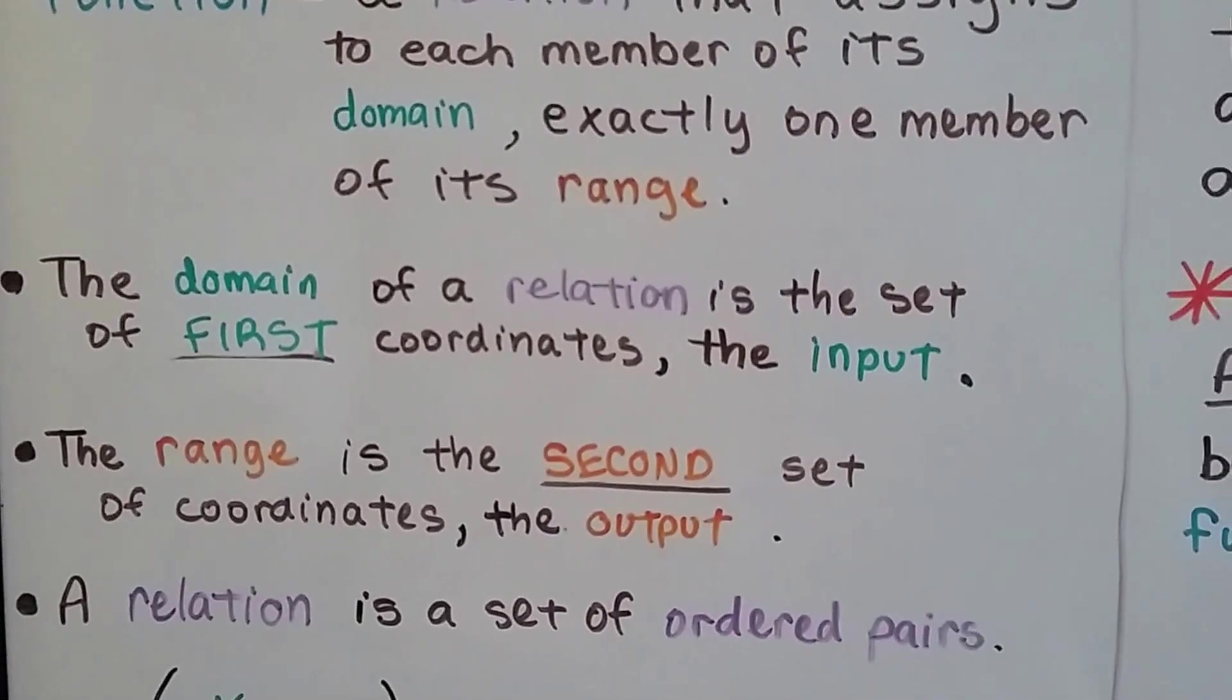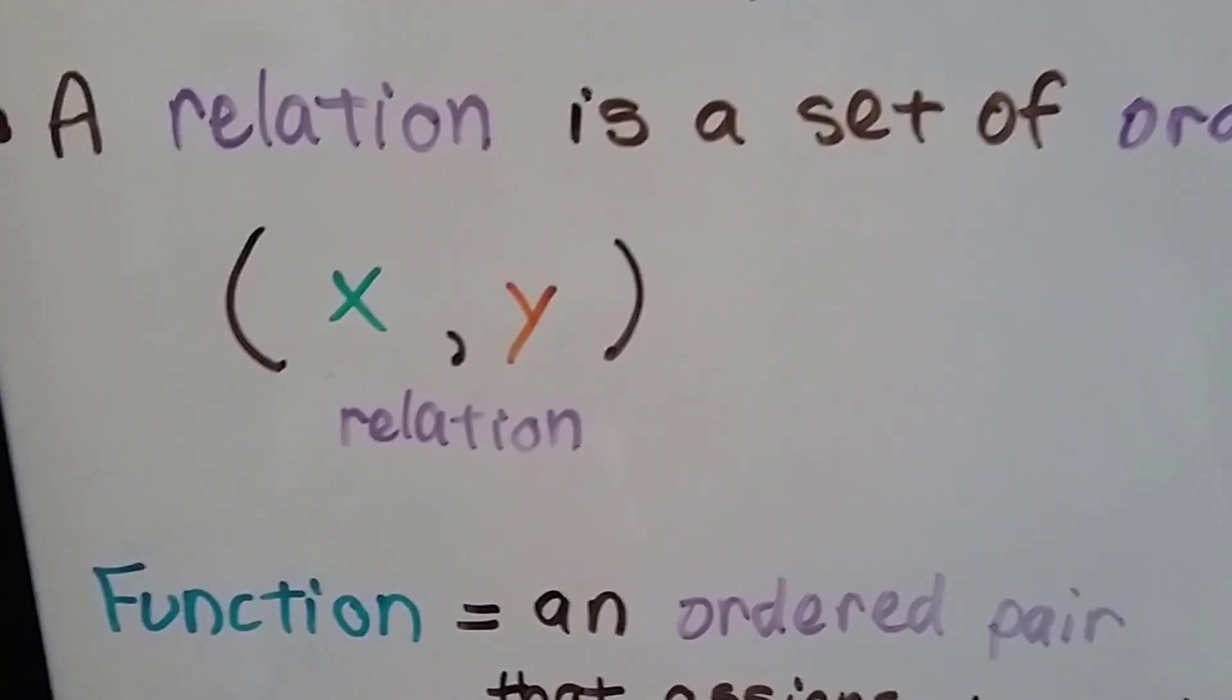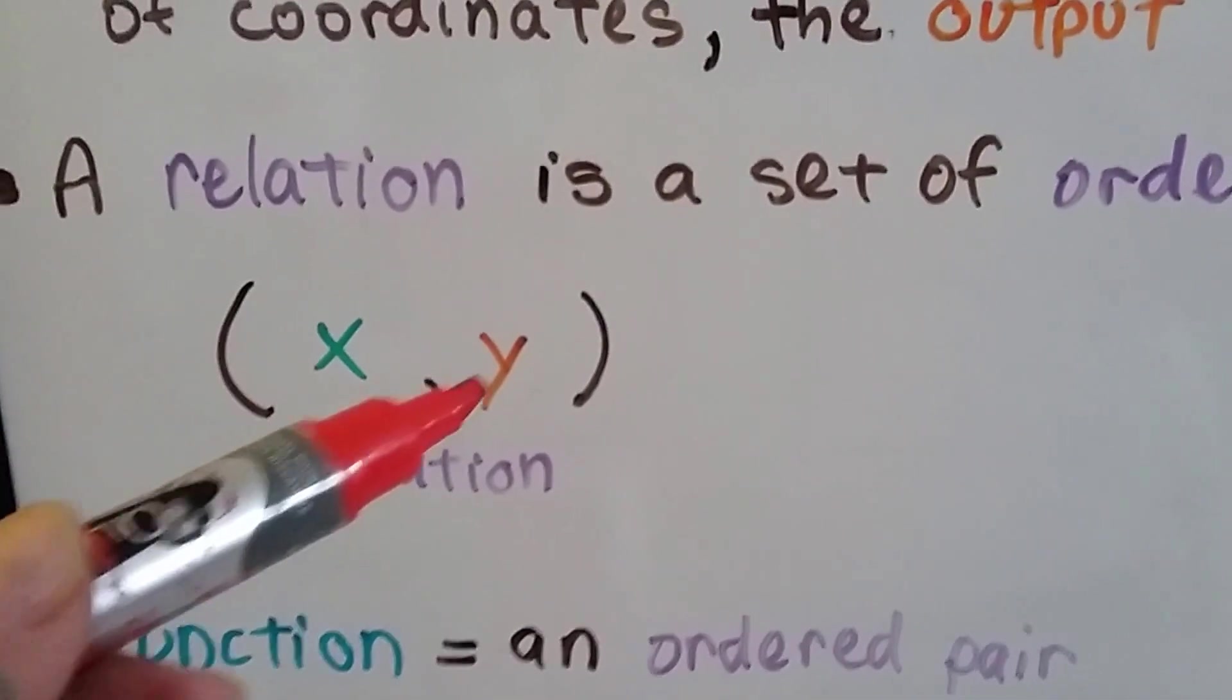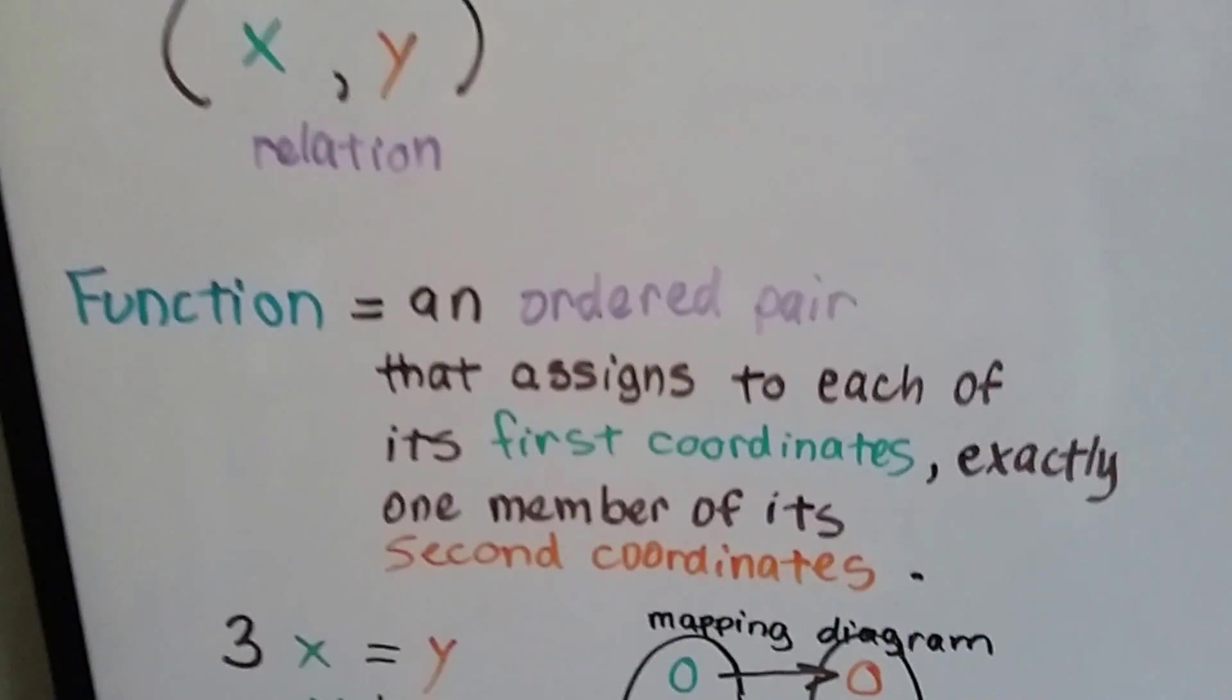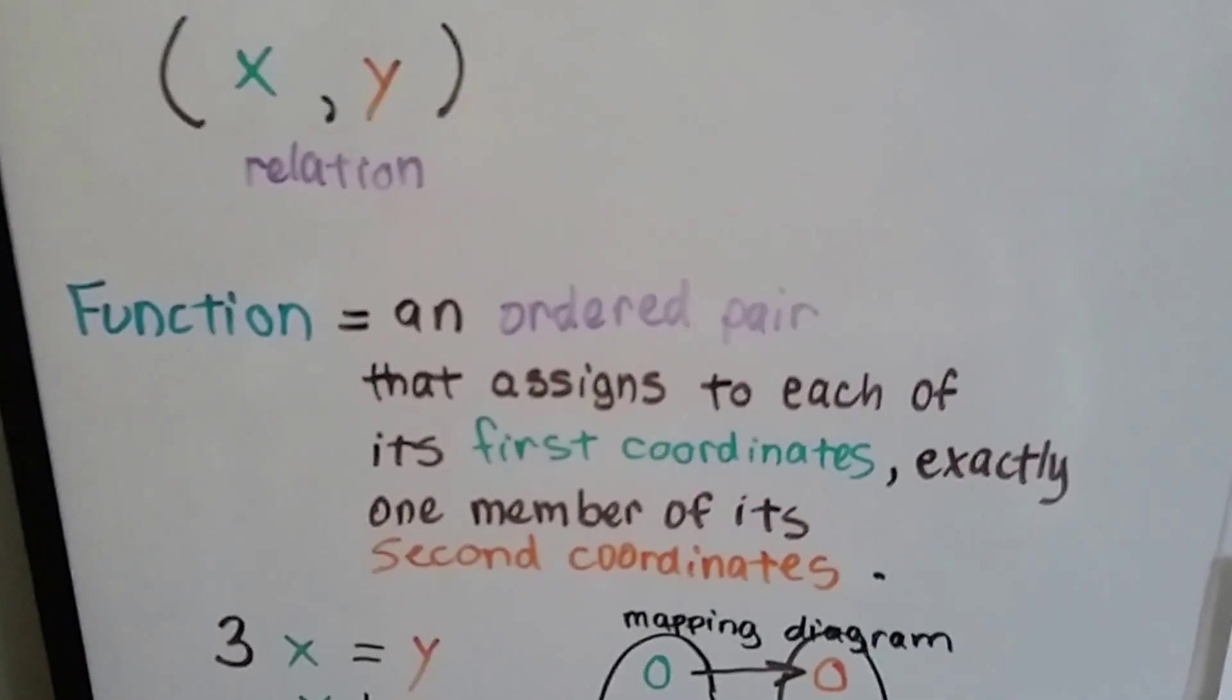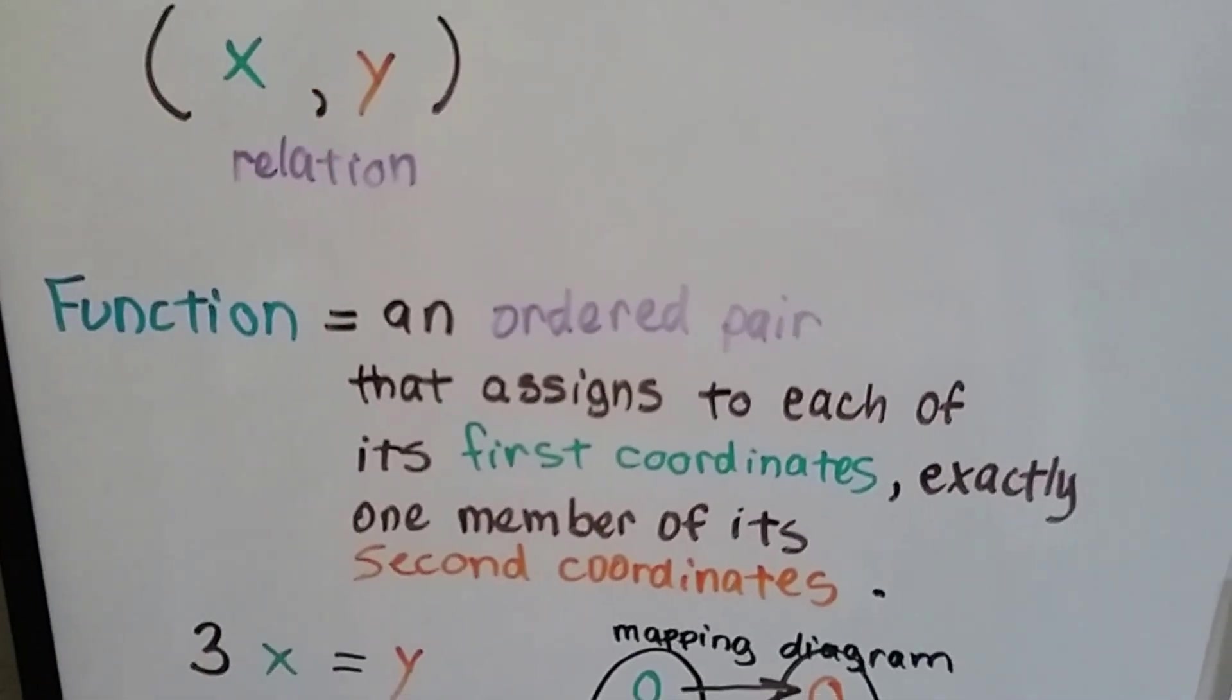So, now you can look at this and you know what I'm talking about. This is the domain, that's the range. So basically, a function is an ordered pair that assigns to each of its first coordinates exactly one member of its second coordinates.